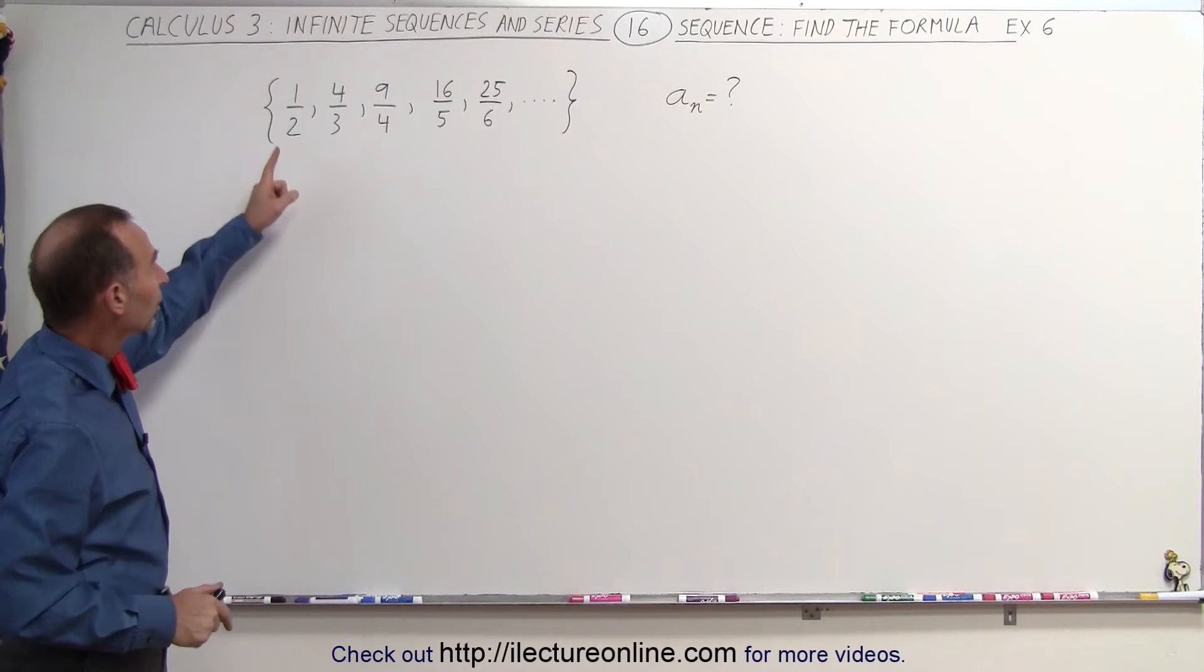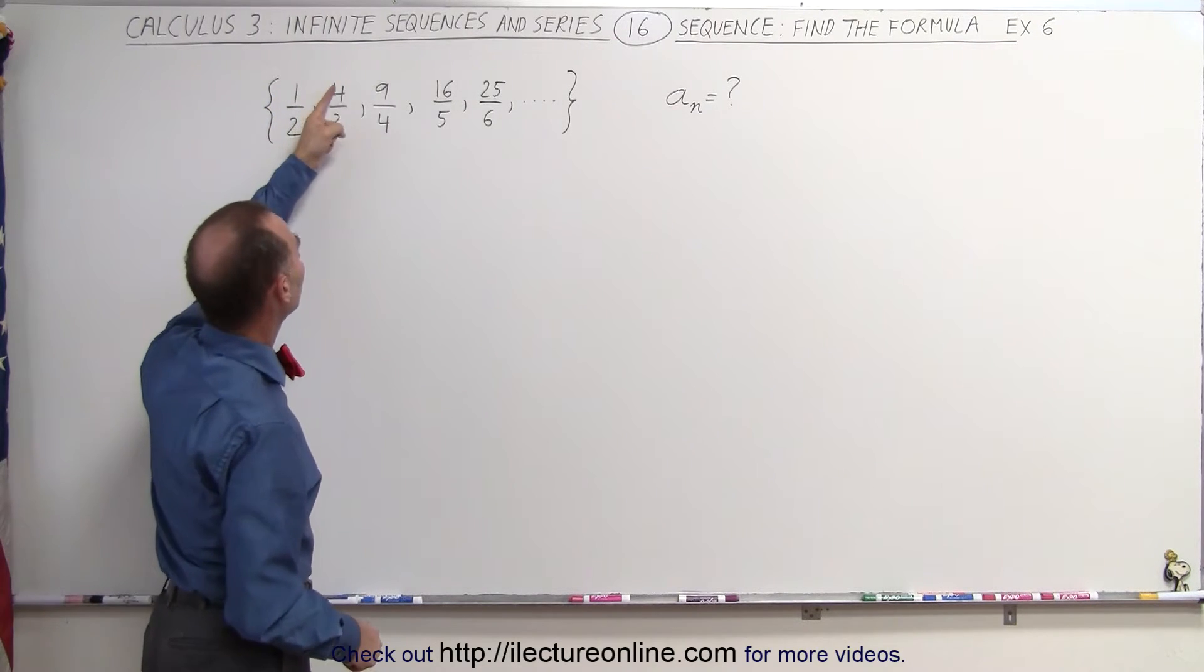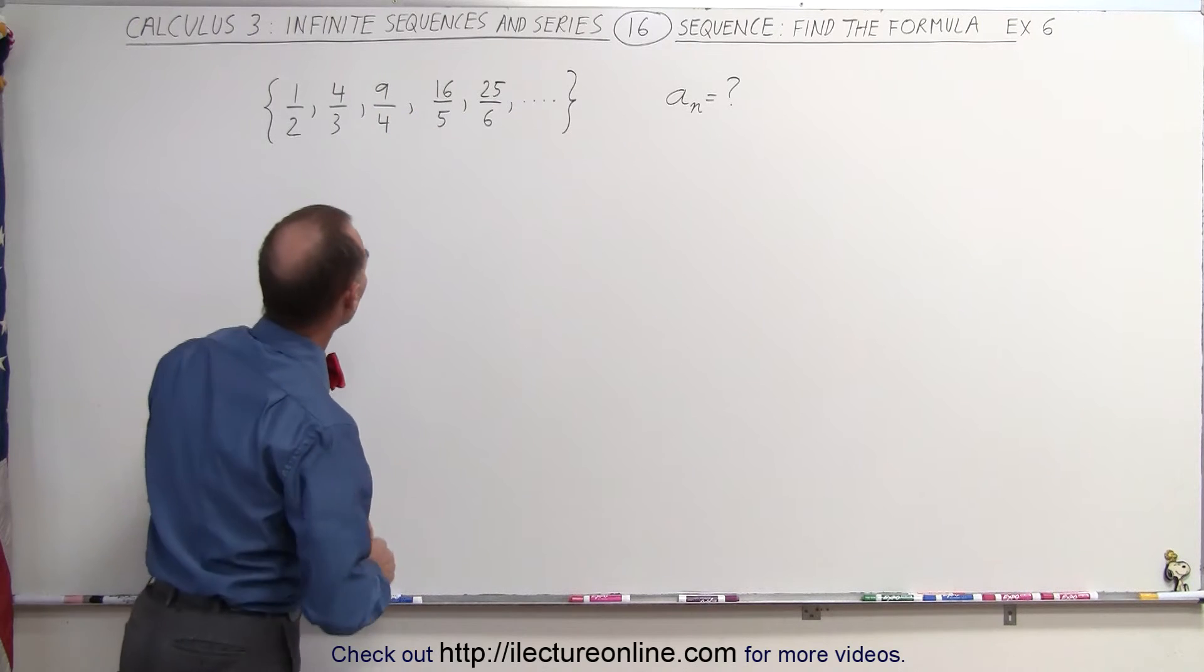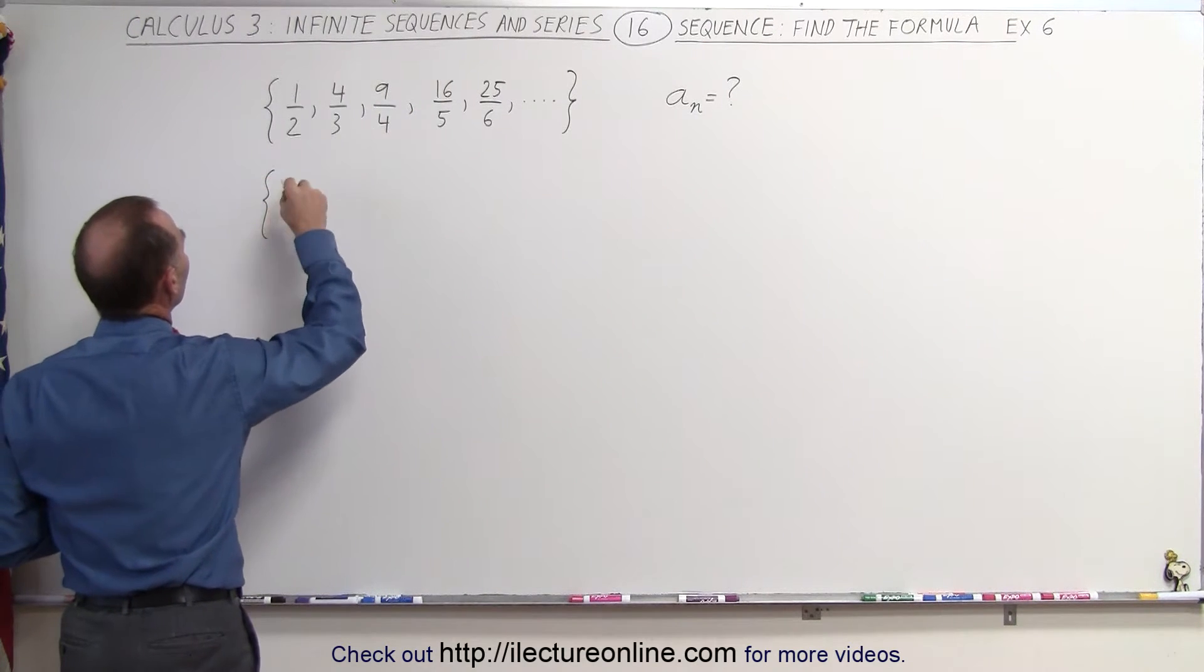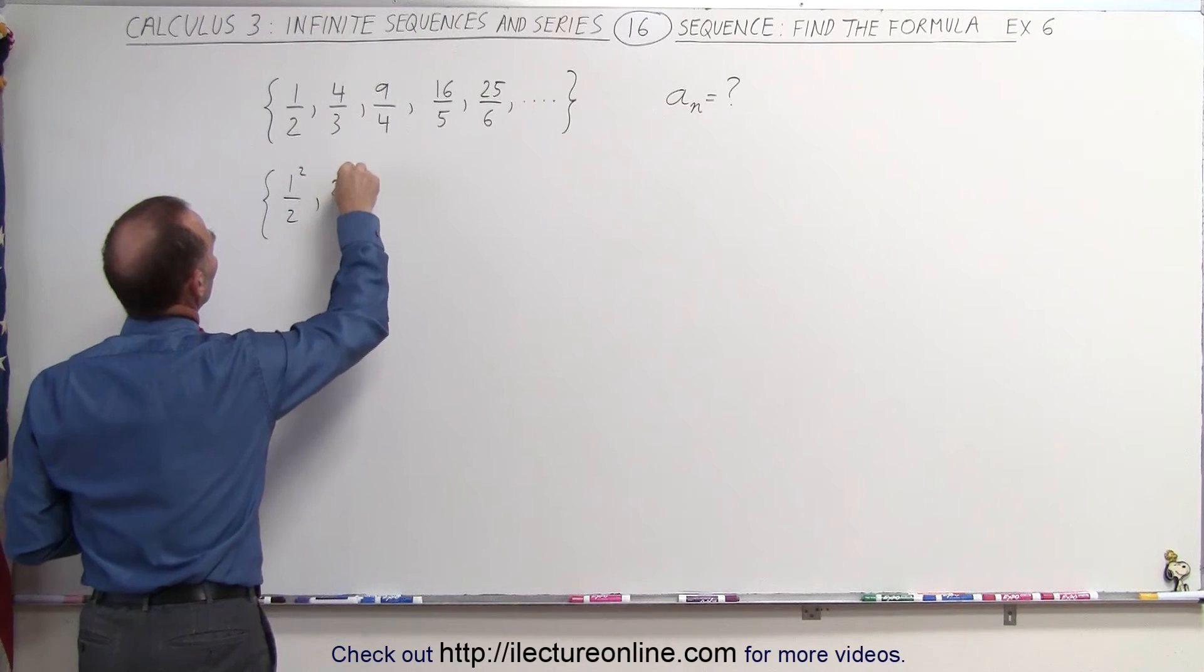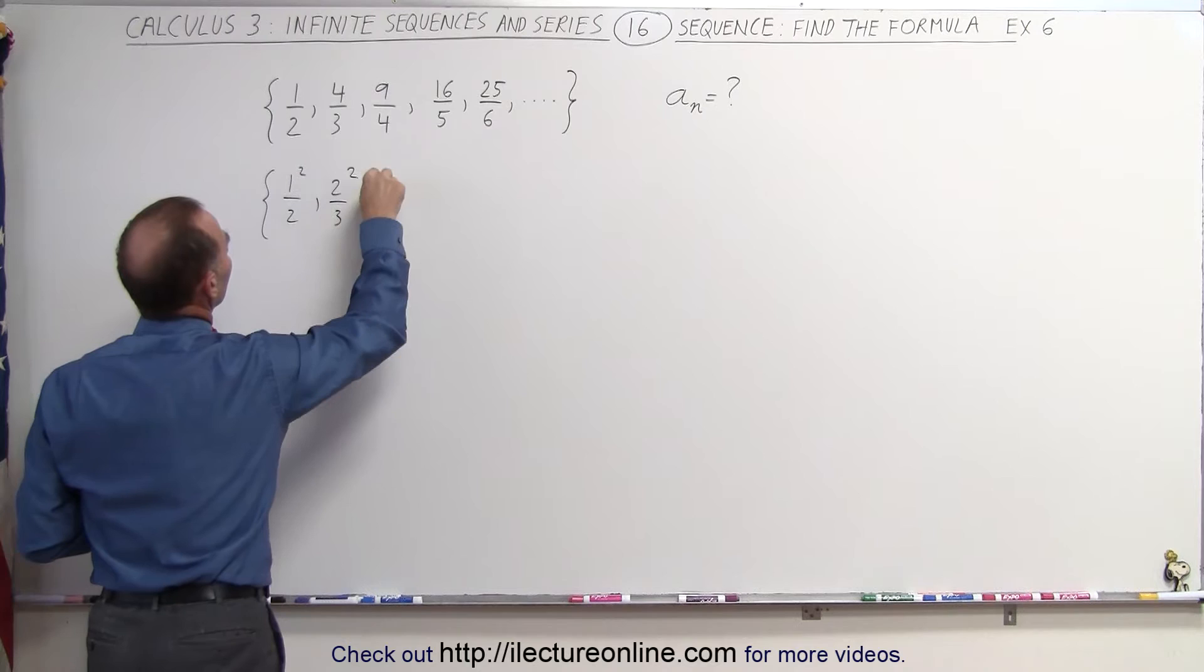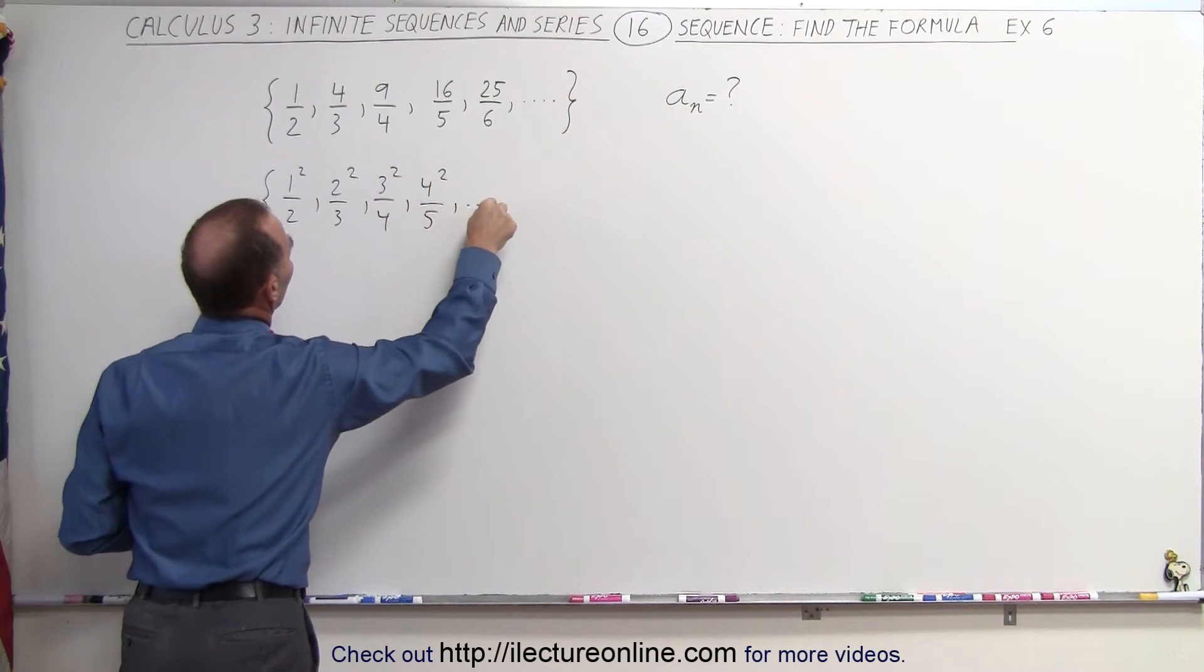Notice the numerators. It looks like we have numbers squared. This would be 1 squared, 2 squared, 3 squared, 4 squared, and so forth. So let's go ahead and rewrite that sequence. Here we have 1 squared over 2, 2 squared over 3, 3 squared over 4, 4 squared over 5, and so forth.